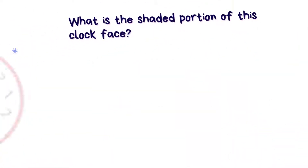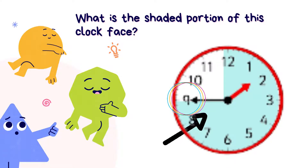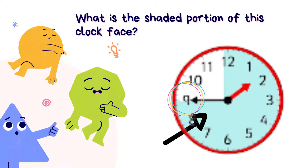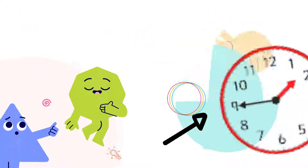Now let's look at the next question. What is the shaded portion of this clock face? Look at the shaded portion carefully. The minute hand is now pointing to number 9. What is the shaded portion of this clock face? Let's check the answer — it's three quarter of an hour.